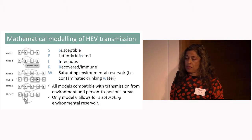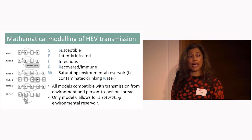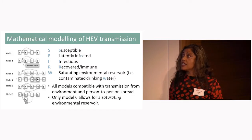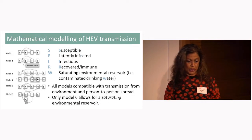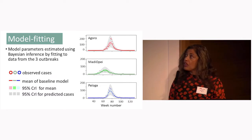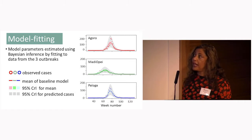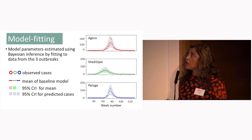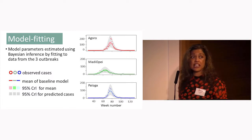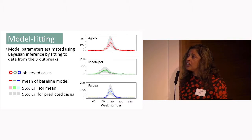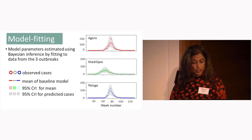I'll present the results of model one, though we explored six models in total representing the uncertainty around transmission dynamics, and the results were broadly similar. The model was fitted to the three outbreaks in Agora, Madiope, and Paloga. The circles indicate the real observed data — cases per week — the gray shaded area represents uncertainty around that, and the solid colored lines indicate the model fits. You can see that the models fitted pretty well to all three outbreaks.